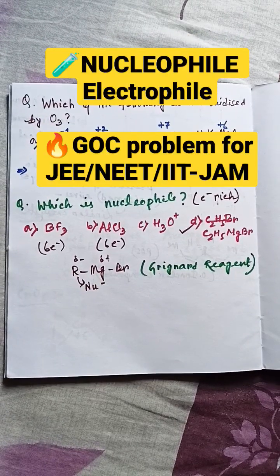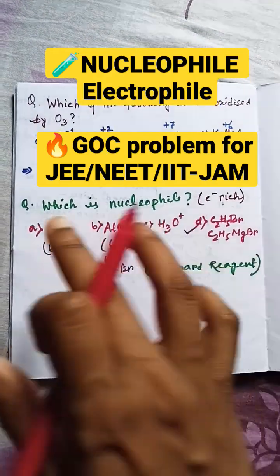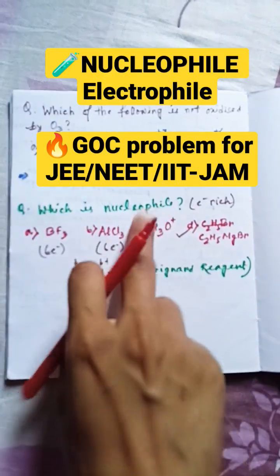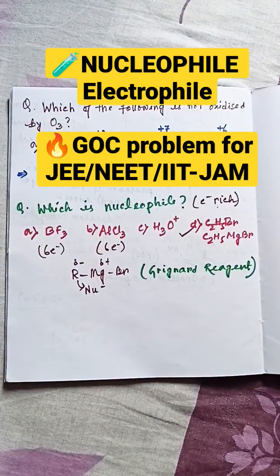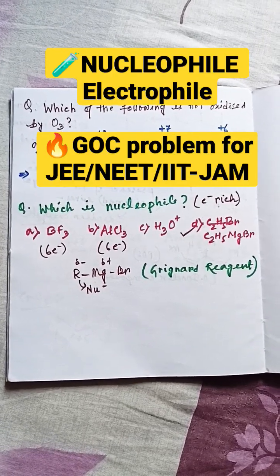Hello, so let's discuss this question: which one acts as nucleophile among these four? Now what is the meaning of nucleophile? Nucleophile means it will be electron rich. It will not be electron deficient. If it's already electron deficient, it cannot donate electrons.